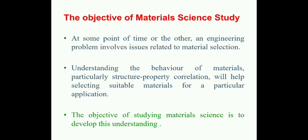Engineering materials refer to materials which are in the solid state. We are not looking into materials in liquid form and gaseous form, although engineers also use oil, water, air, oxygen, etc. When an engineer says 'engineering material,' it concerns solid state materials. Similarly, science here also has only a limited meaning — the science of physics and chemistry — and not the entire science.